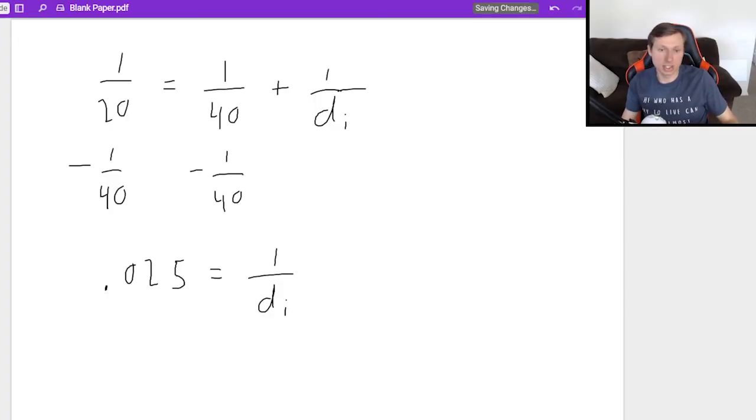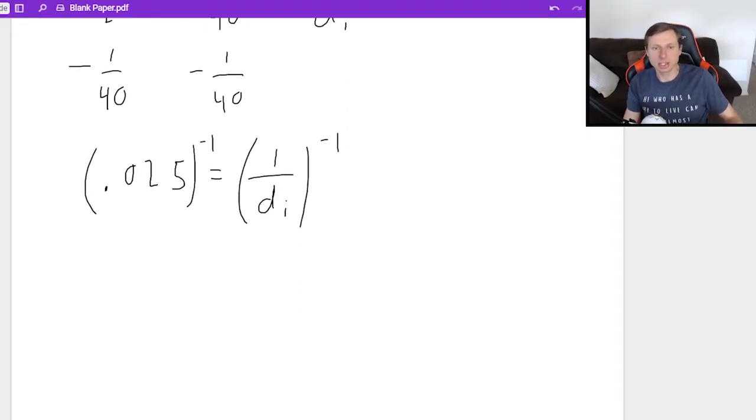Now, the easiest way to solve for DI here is to simply raise both sides to the negative first power, invert it. That's going to give you DI on the right. And on the left, we're going to get 0.025 to the negative 1 power.